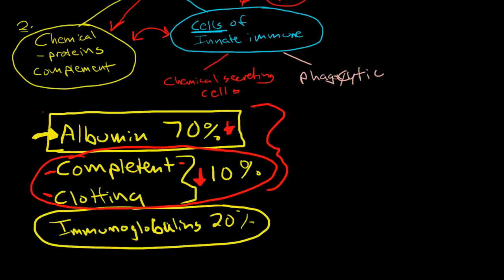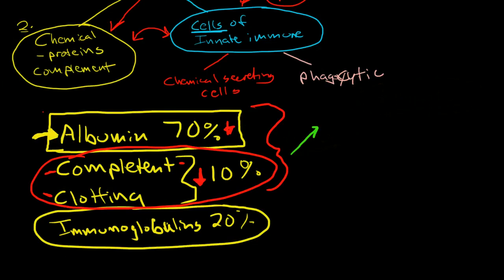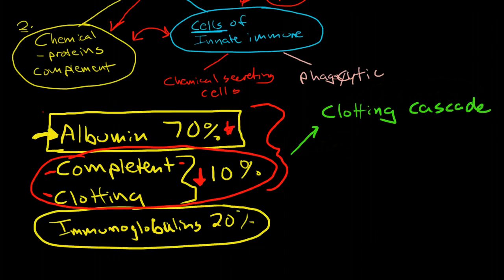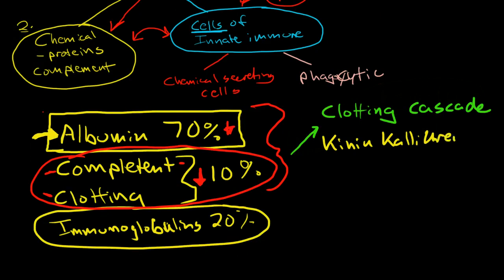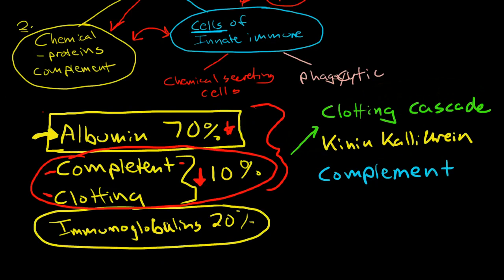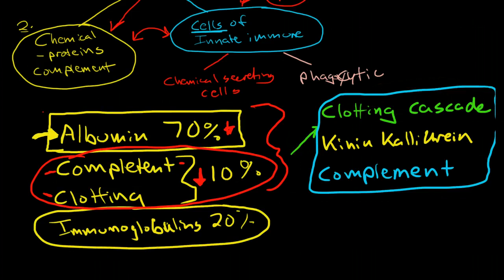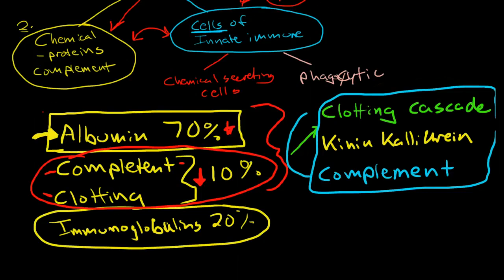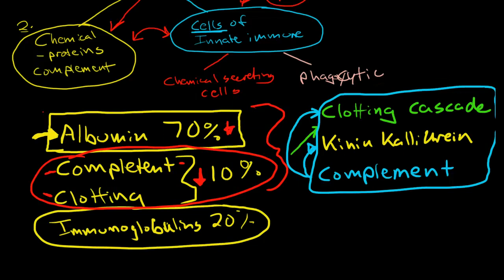There are three major protein cascades in the bloodstream: the clotting cascade, the kinin-kallikrein system, and the complement system. These are very much intertwined and involved in each other's activities. As we talk about the process of inflammation, you will see how connected these systems are — inflammation can actively start or increase the activity of the clotting cascade.